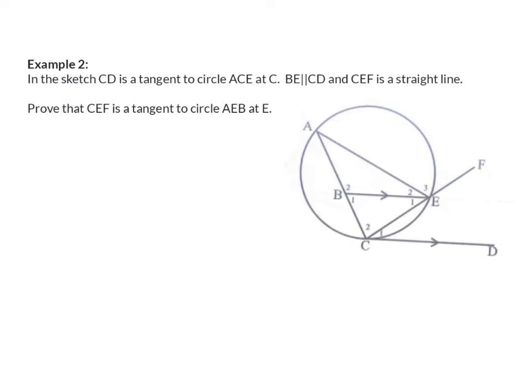Example 2. In the sketch, CD is a tangent to the circle ACE at C. We are also given that BE is parallel to CD and that CEF forms a straight line. We are asked to prove that CEF is a tangent, but now, to the circle AEB. So, if we were to draw a circle around point A, point B and point E, we need to now prove that CEF will be a tangent to that circle. In this question, we don't have any radii, we don't have any diameters, so there's no theorem we will be able to use with a 90 degree angle like the previous one.